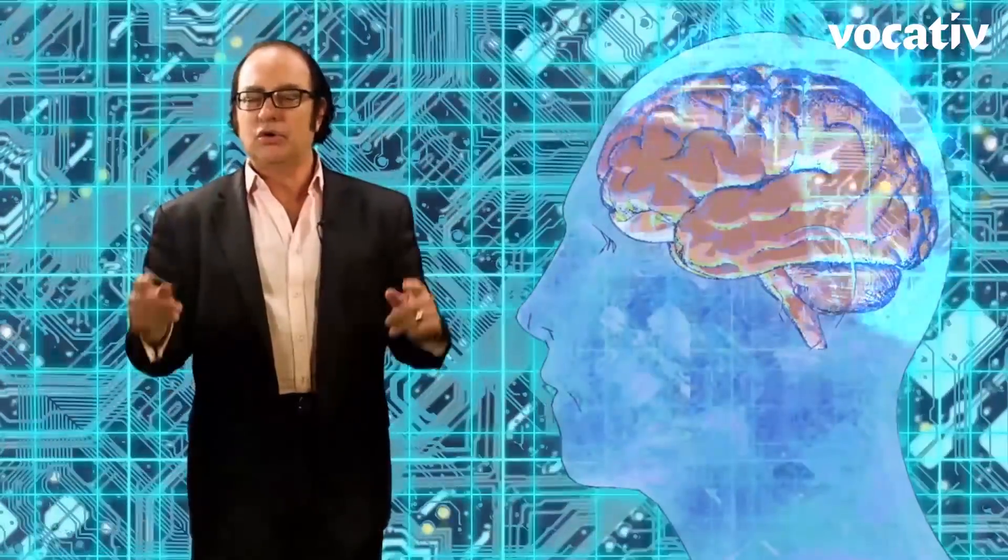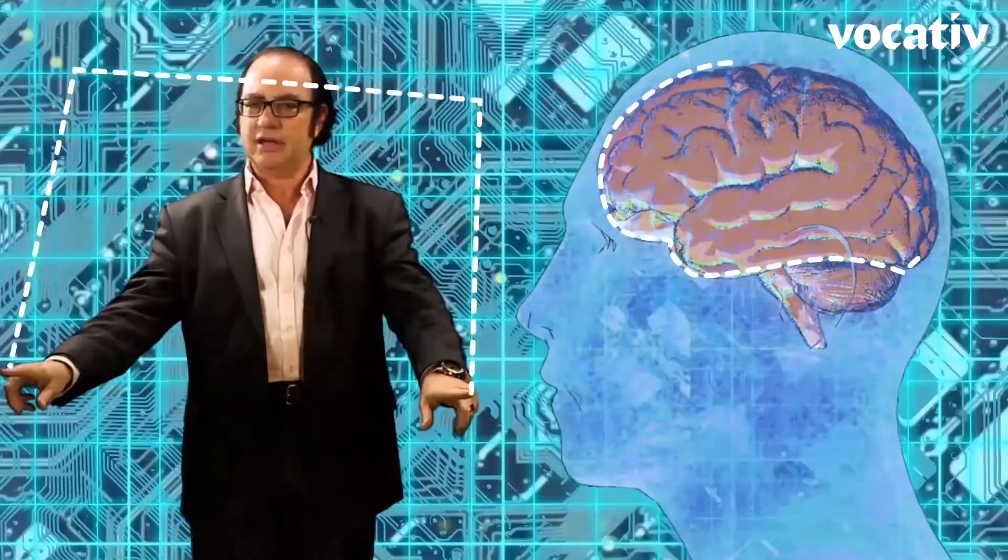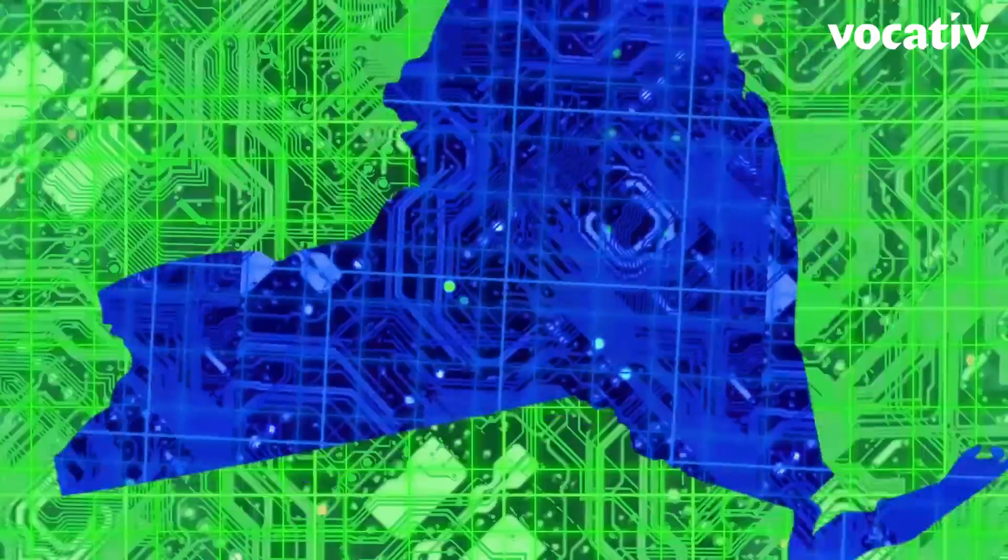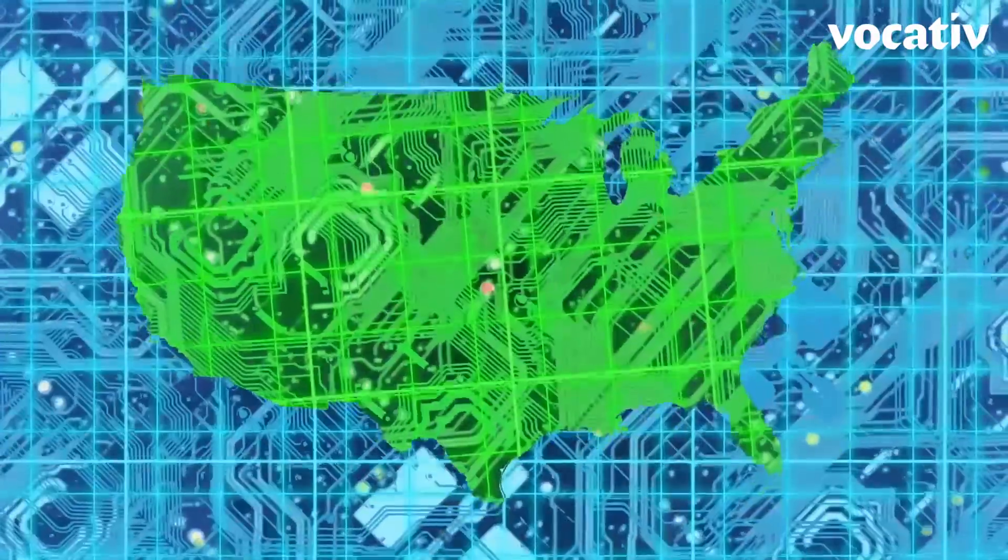If you look at our current neocortex, it has a surface area about the size of a dinner napkin. And we'll be able to build artificial neocortex with the surface area of Manhattan, or New York, or the US, or the planet.